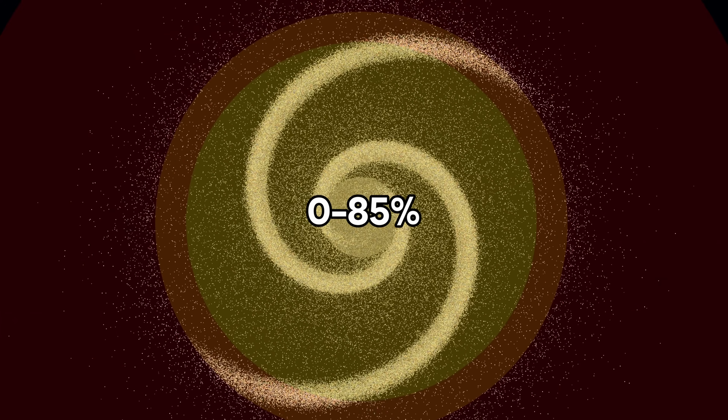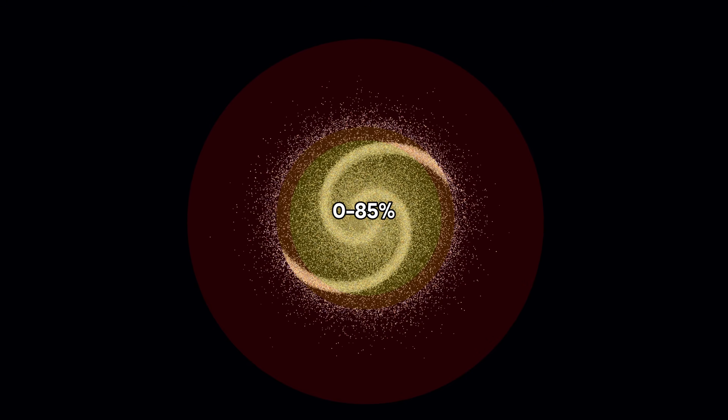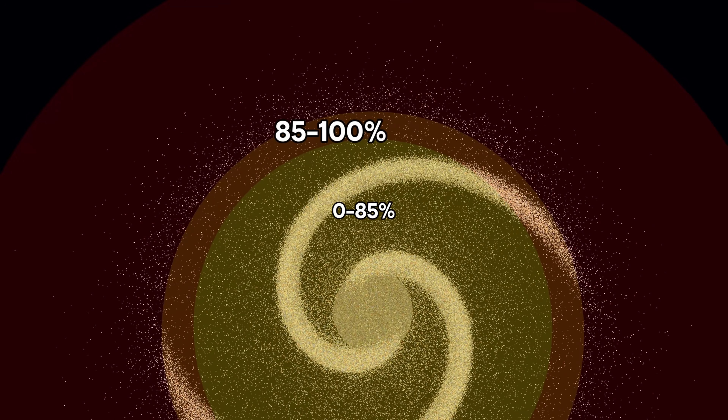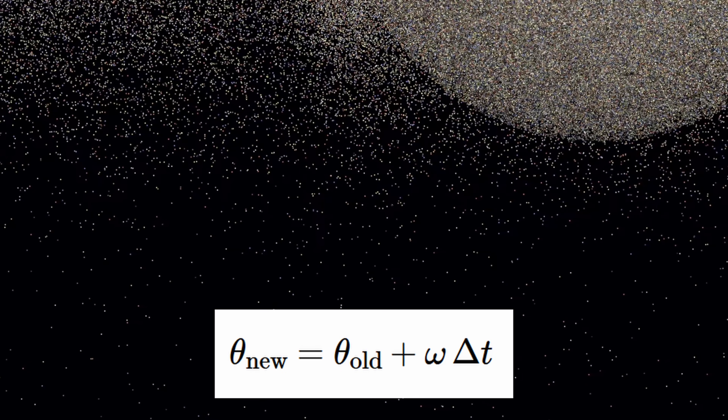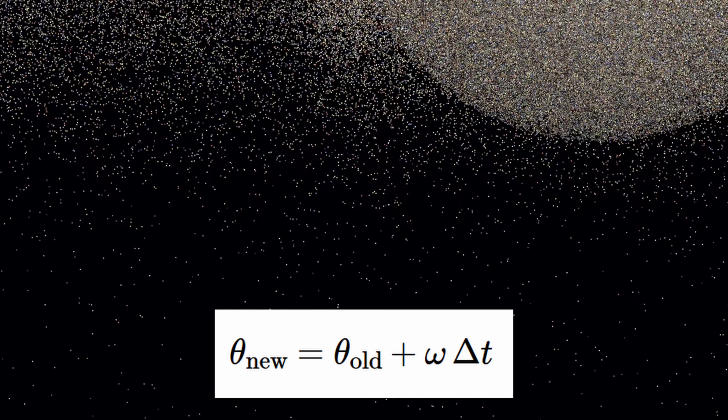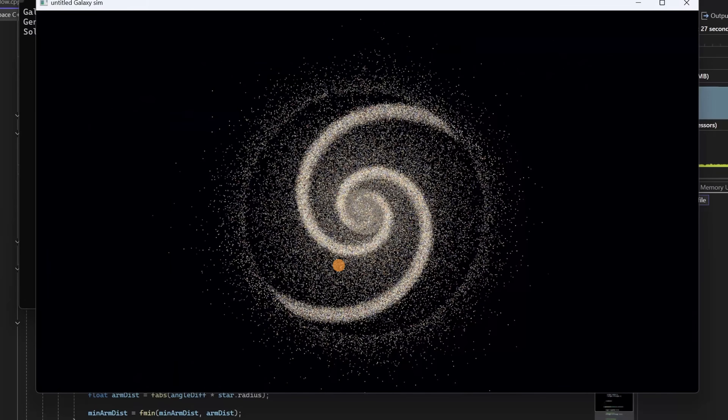The core disk from 0 to 85% radius stays at full density, then there's a transition zone from 85 to 100% radius that gradually fades from 100% to 50% density. This ends with an outlier region from 100 to 200% radius with exponential decay down to just 8% acceptance probability. For animation, each star's angle increases by its angular velocity times delta time each frame. Then X and Z coordinates get re-computed from the radius and new angle, while Y stays the same. This makes stars rotate around the center, with outer stars rotating slower.